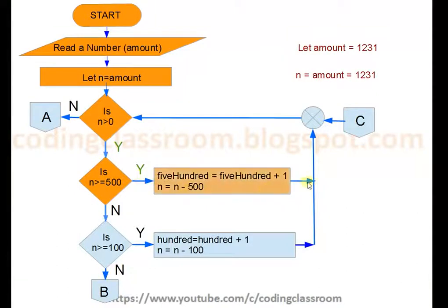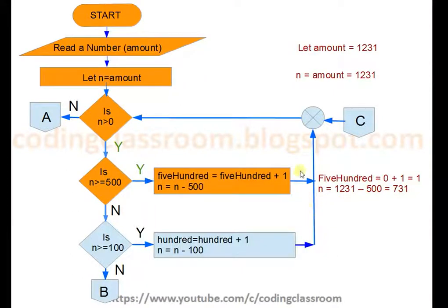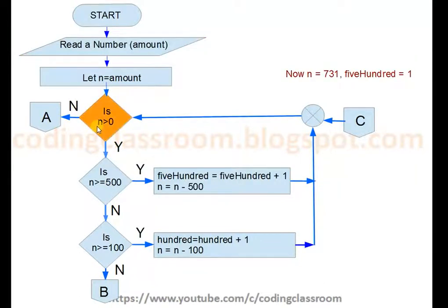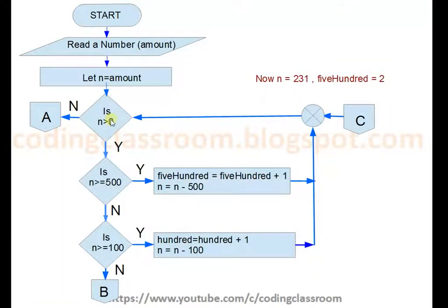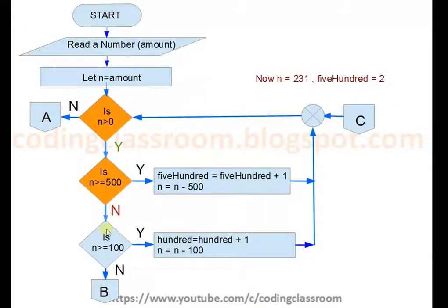So 500 becomes 1 and n becomes 1198. Then we go back to the loop condition. n is greater than 0, yes. Is n greater than or equal to 500? Yes. We perform the operations again — 500 becomes 2 and n becomes 698. We loop again, and n becomes 231 and 500 has become 3, meaning we have three notes of rupees 500.